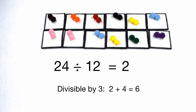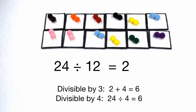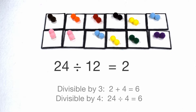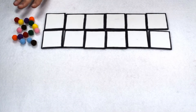It should also be divisible by 4. 24 only has two digits, so we just have to check 24. 24 is divisible by 4. So since it's divisible by 3 and 4, we can see that 24 is also divisible by 12, and it follows our rule. Let's test out another example.